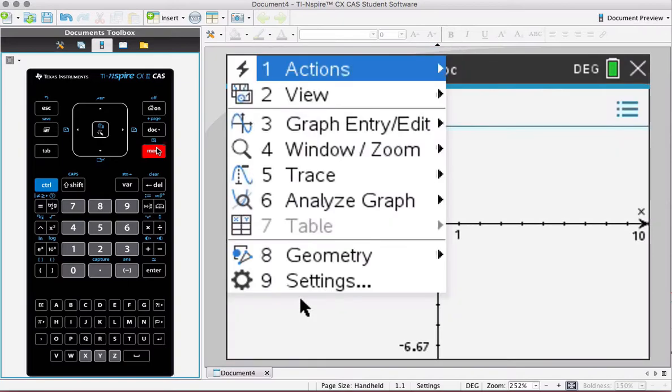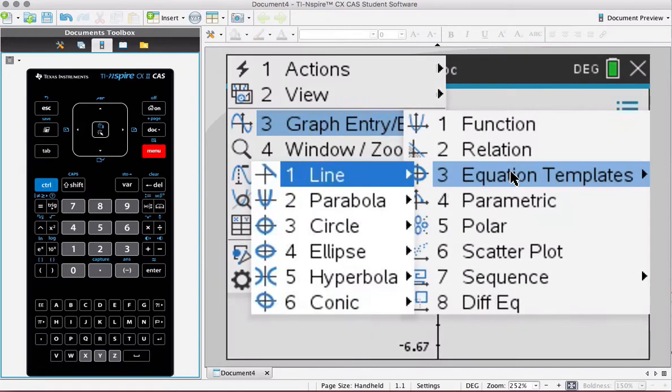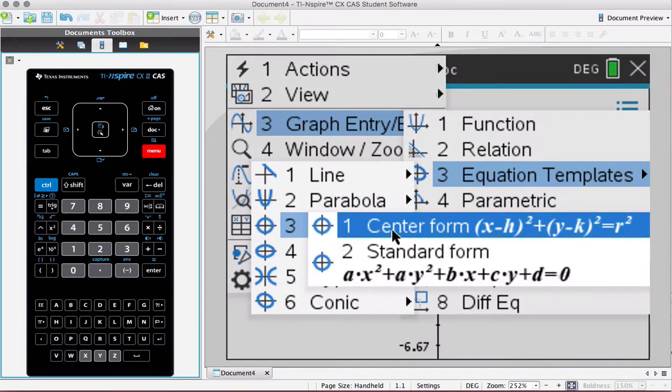I'm going to go menu, I'm going to go graph entry, I'm going to go equation and templates, I'm going to go down to my third option which is circle and you'll see here you have your center form and your standard form.